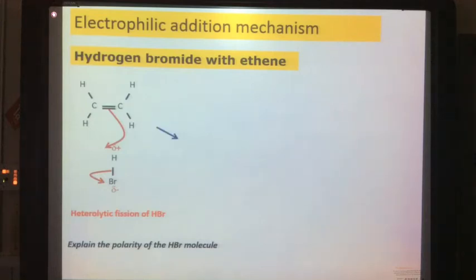So, the intermediate carbocation would look like this. Effectively, let's call this the new H that's been added on. This pair of electrons is this bond here. The carbon here has effectively lost an electron because it's over there now. This carbon has still got all four of its electrons and so we get a positive charge on this carbon.